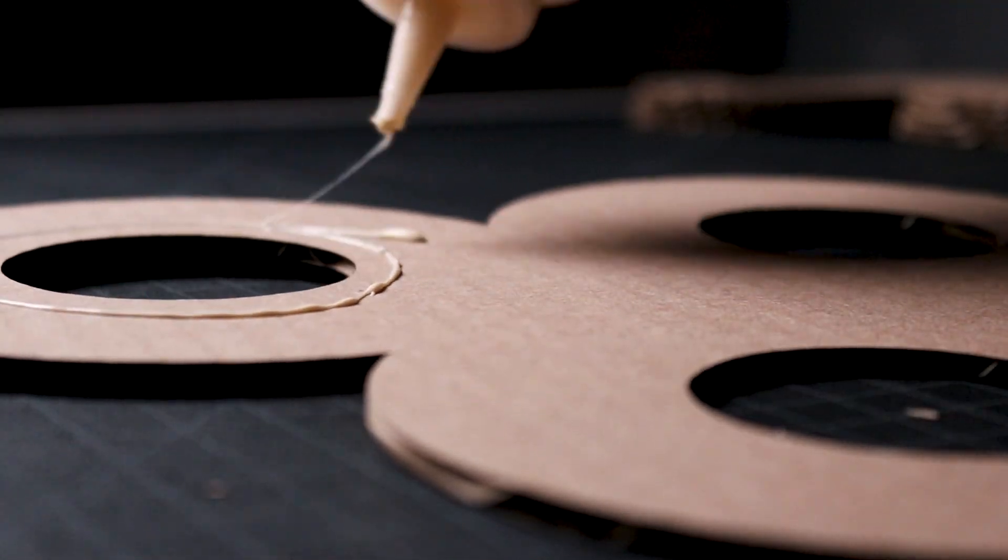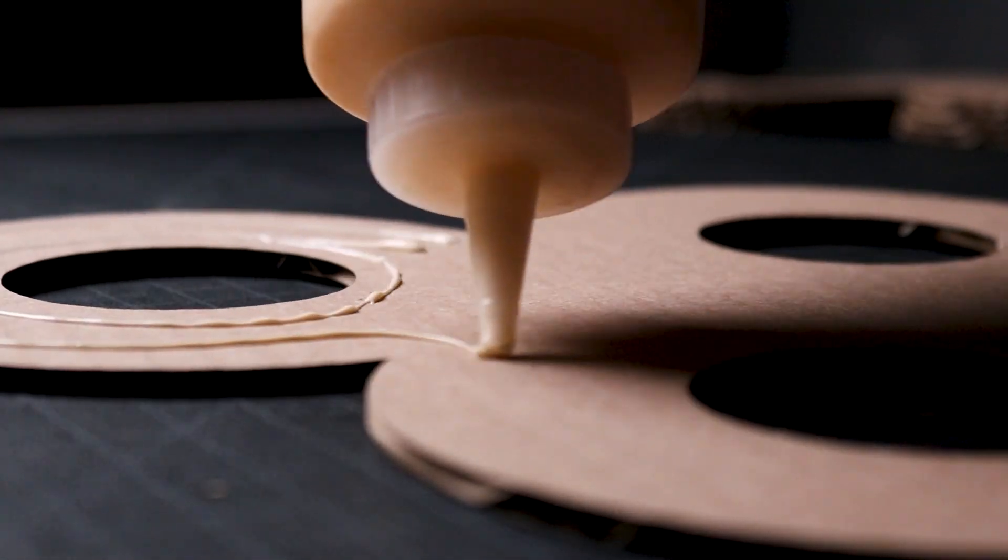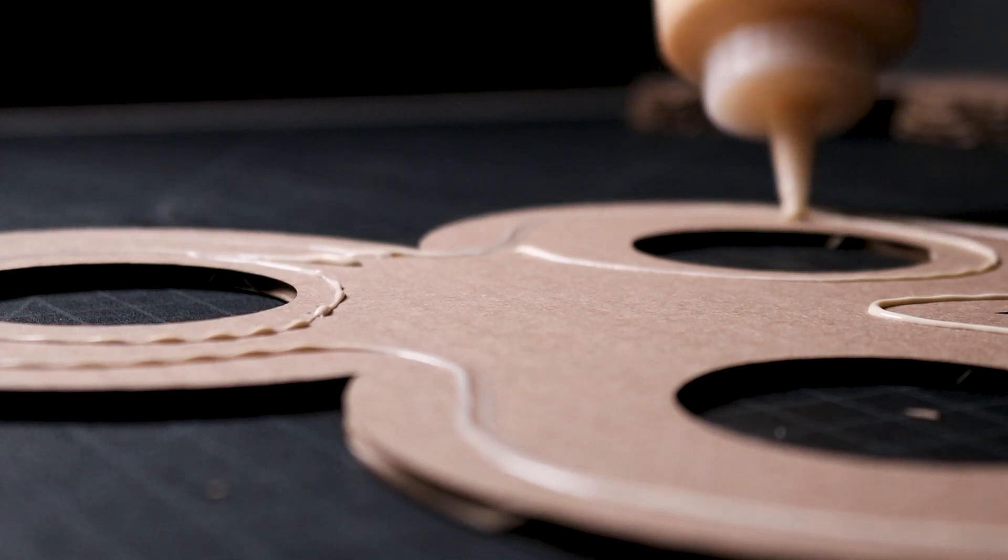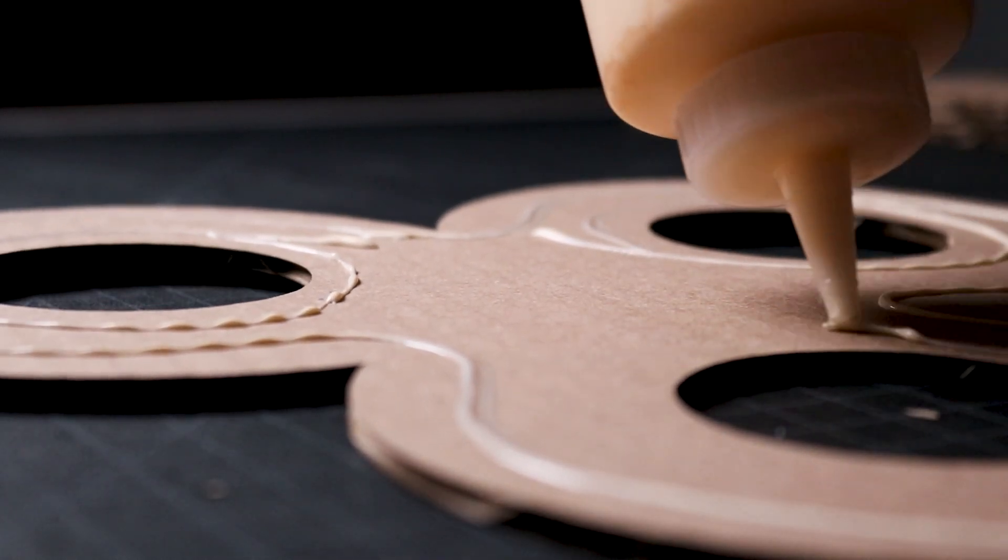I follow the same method for the next five layers with the circle cutouts. These cutouts will be the area where the pen organizer cones are inserted and held in place.